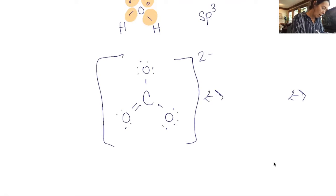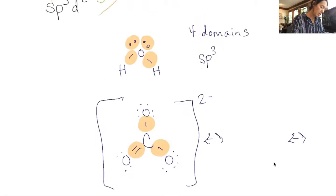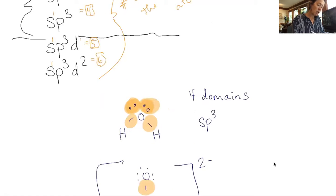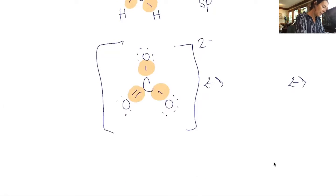However, we're talking about hybridization. So I'm not going to draw those right now. I've got one, two, three domains. So what you should have just picked up there is the double bond is one domain. And what you should have picked up here is yes, electron pairs count as a domain. So for the carbonate ion, I've got three domains. Therefore we would say that it is SP two hybridized.